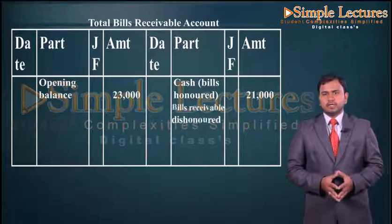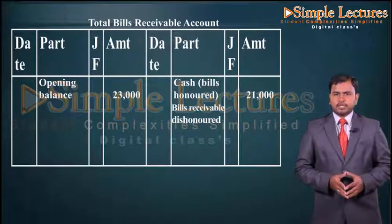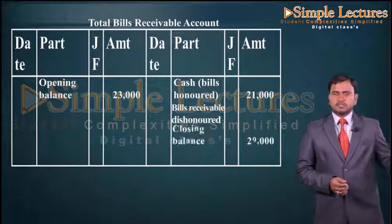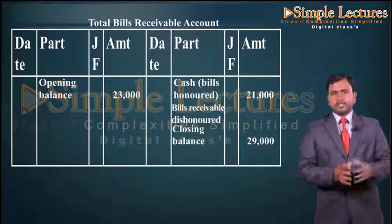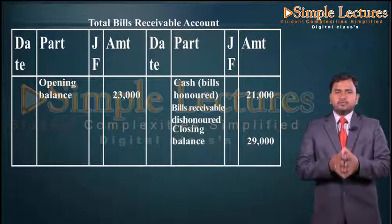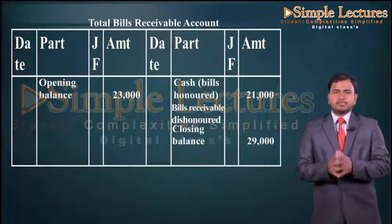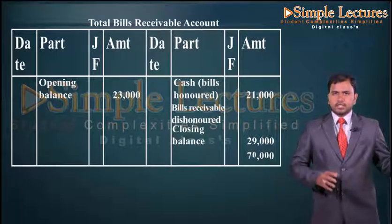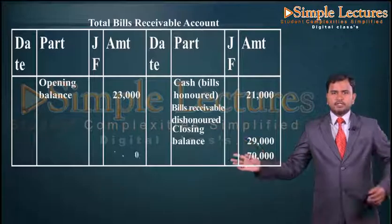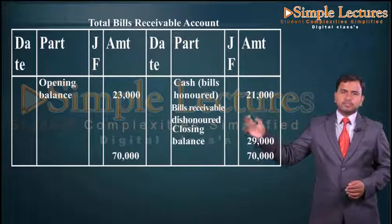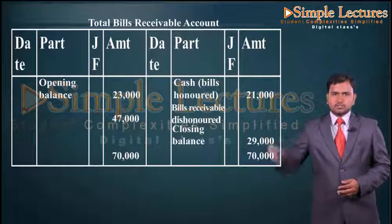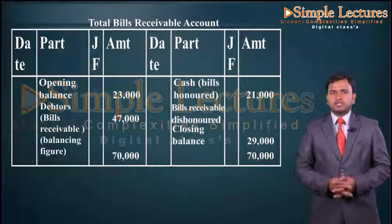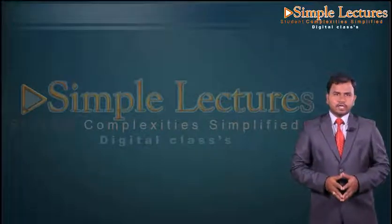Then we have bills receivable dishonored, recorded again on the credit side: bills receivable dishonored twenty thousand. The closing balance given is twenty nine thousand. The total of the credit side is seventy thousand and the same is brought to the debit side. Seventy thousand minus the opening balance gives a difference of forty seven thousand — that is debtors, in bracket bills receivable, as a balancing figure transferred to the total debtors account.